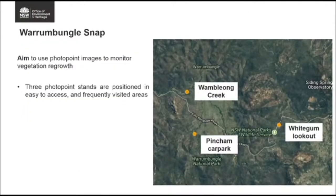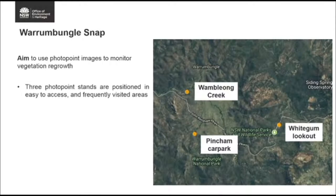The first project is Warrumbungle Snap, which uses images to monitor vegetation regrowth over a period of time. We have three photo points set up within the park. Those points were chosen because they can monitor change, are readily accessible, and are visited frequently throughout the year, allowing us to capture images regularly.